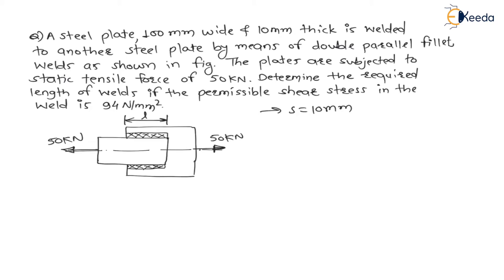The plates are subjected to static tensile force of 50 kN. See it is subjected to the force of 50 kN, therefore force P is equal to 50 kN which is nothing but 50 into 10 to the power 3 N. Determine the required length of weld if the permissible shear stress in the weld is 94 N per mm square.